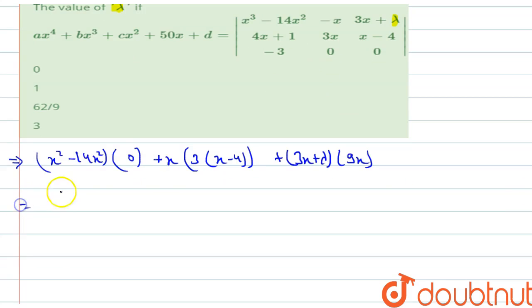Now let's solve this further. This is 0 and this is 3x square minus 12x plus 27x square plus 9x lambda.